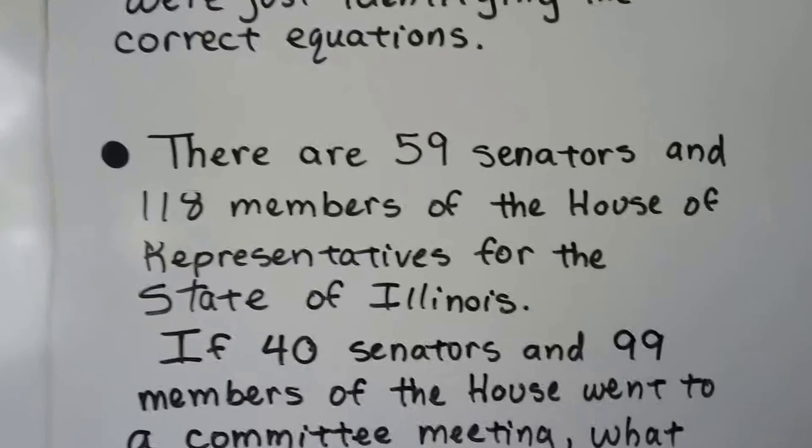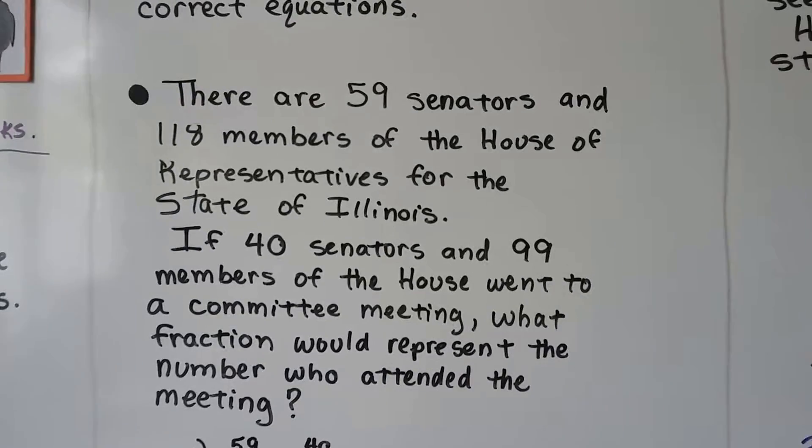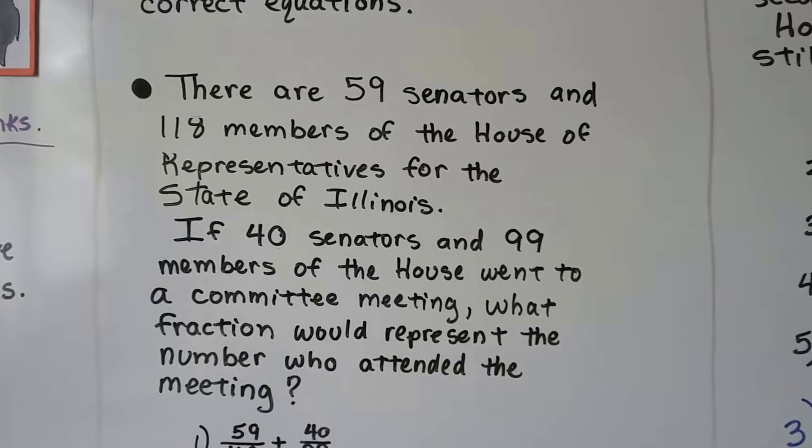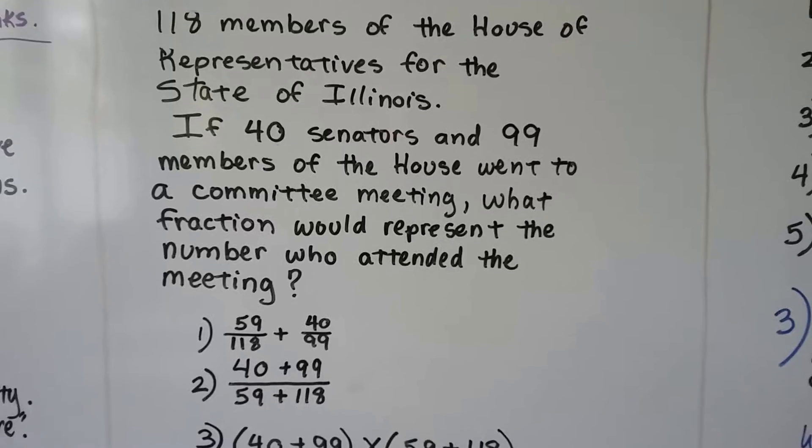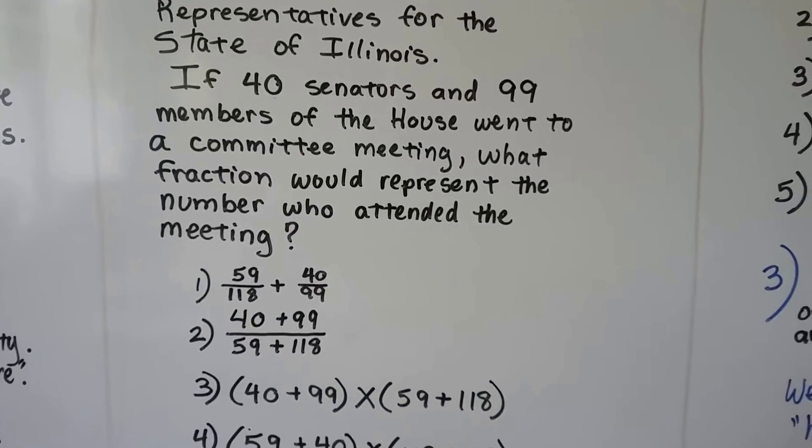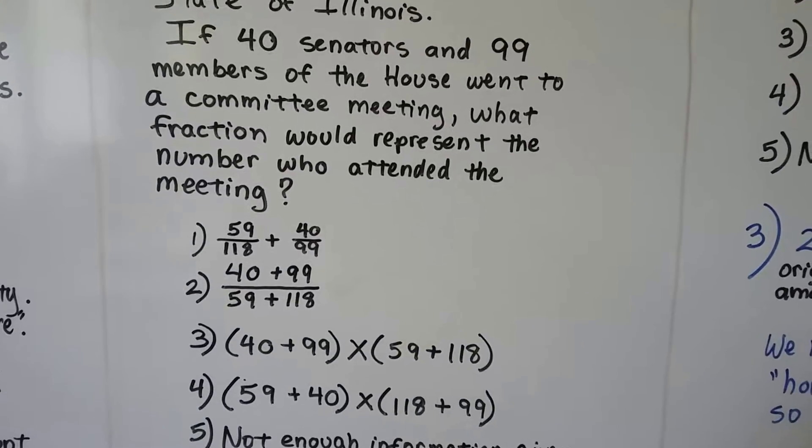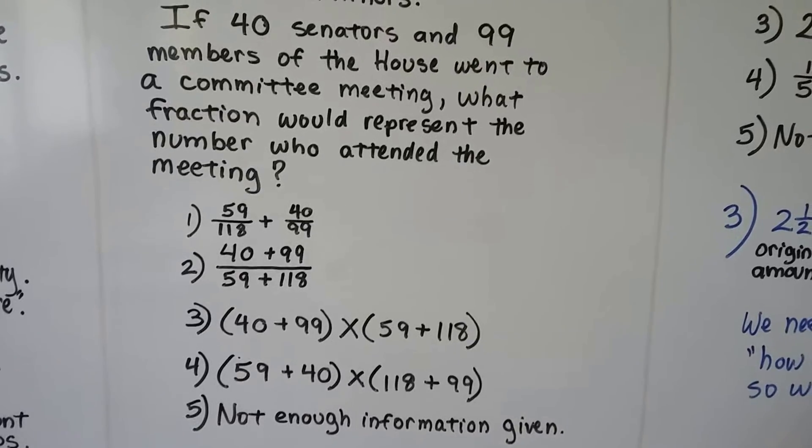So here's our first problem. There are 59 senators and 118 members of the House of Representatives for the state of Illinois. If 40 senators and 99 members of the House went to a committee meeting, what fraction would represent the number who attended the meeting?